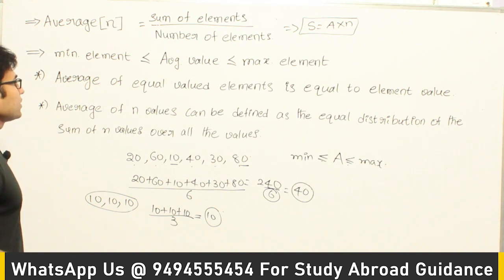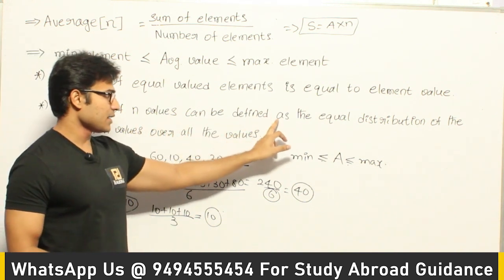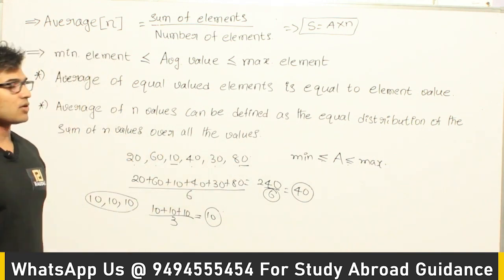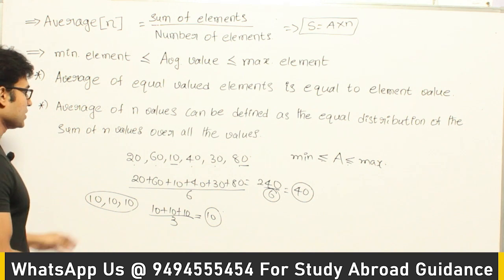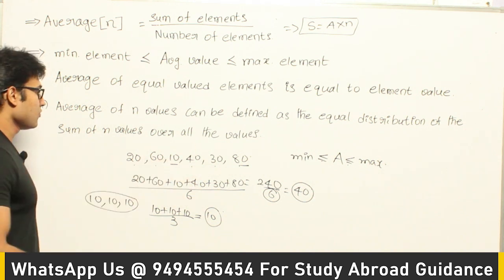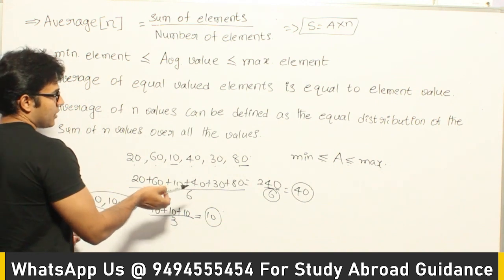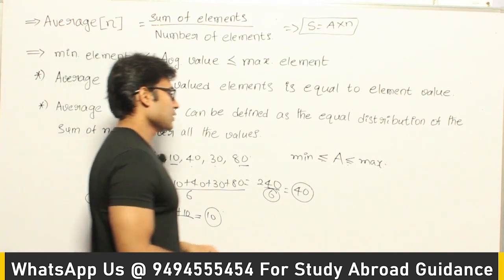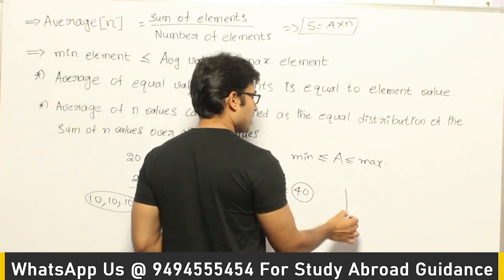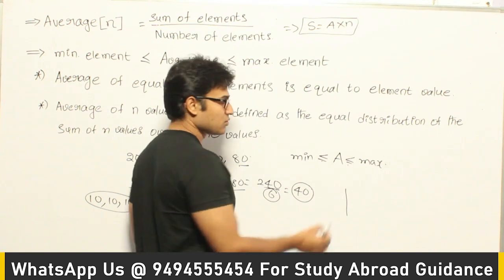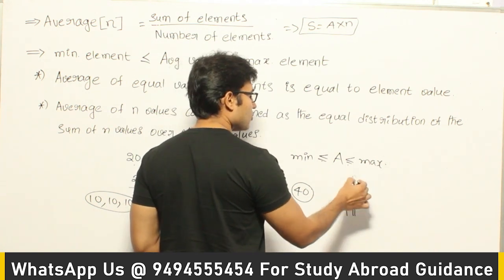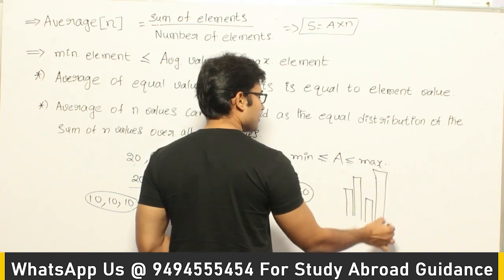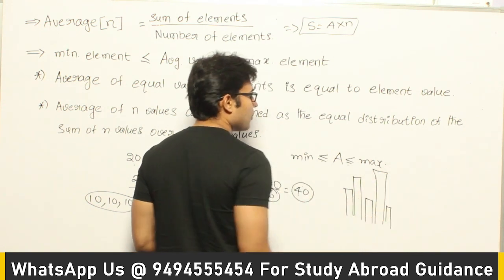Now other way of looking at the average is average of n elements can be defined as the equal distribution of the sum of n values over all the values. So if you want to see this average in some other way, it is like some values are having higher values and some are having lower values. So if you look at this representation, let us say I want to represent all the values using a bar graph. So some values are higher and some values are lower, some values are really low.